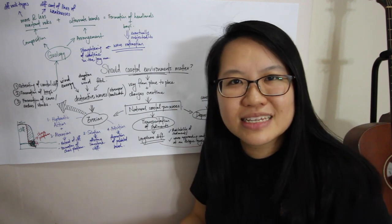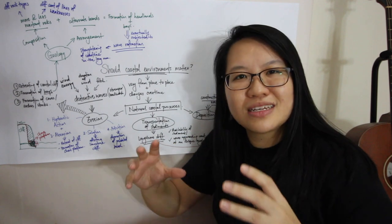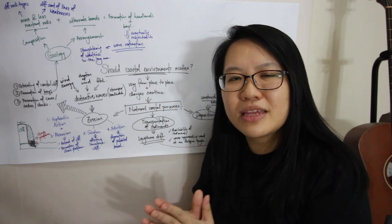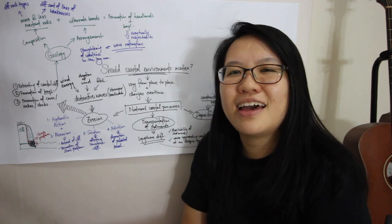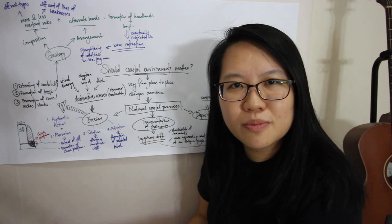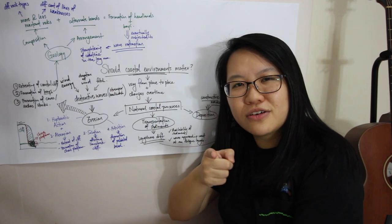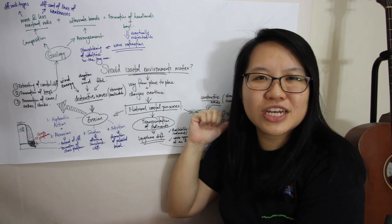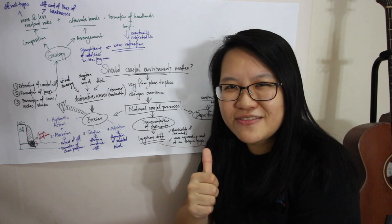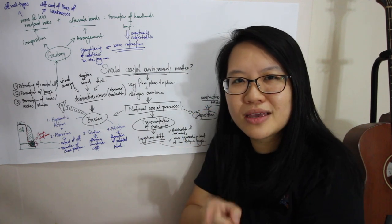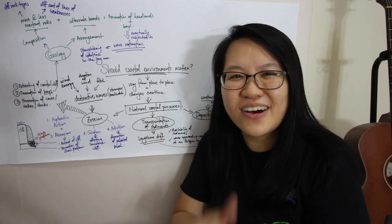I hope this whole mind map can actually help you better understand the chapter of coasts, particularly the foundation in gateway one. Once you understand this, gateway two and three will be much easier and you'll be better equipped to answer the inquiry question. Hopefully this video is useful for your revision — I'll try to get gateway two and three's mind maps out soon. All the best, see you then!